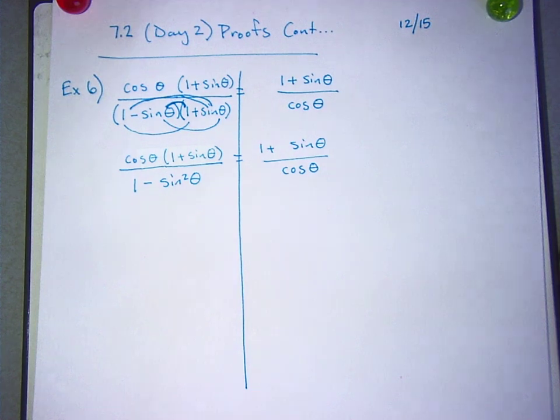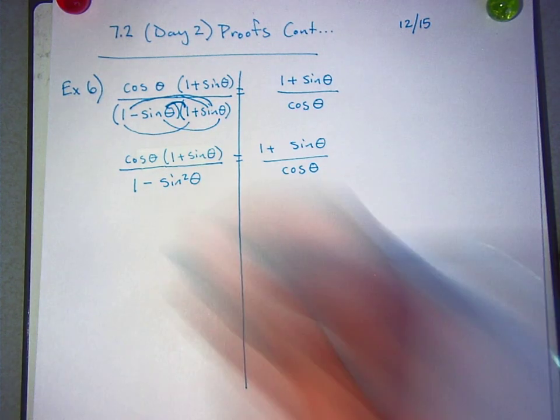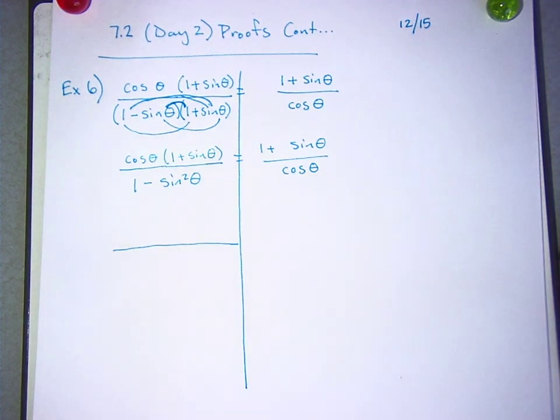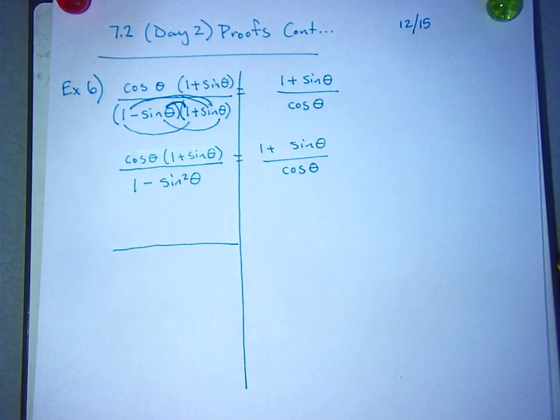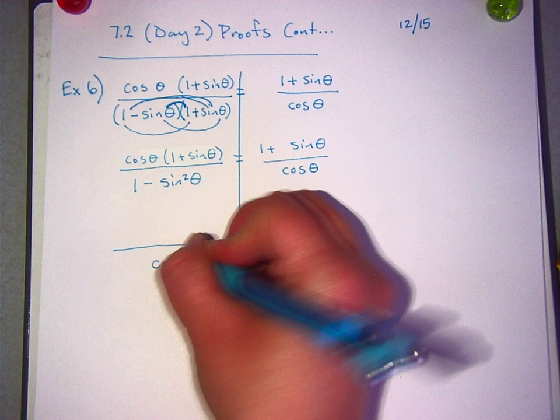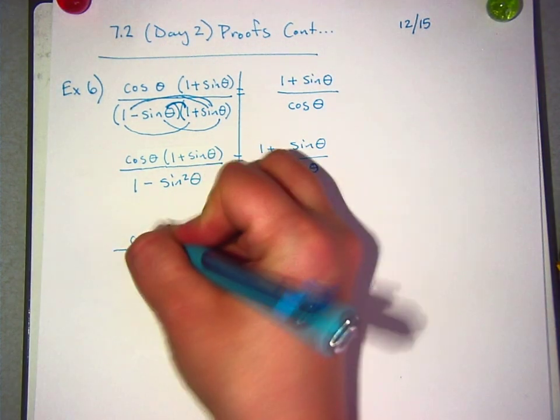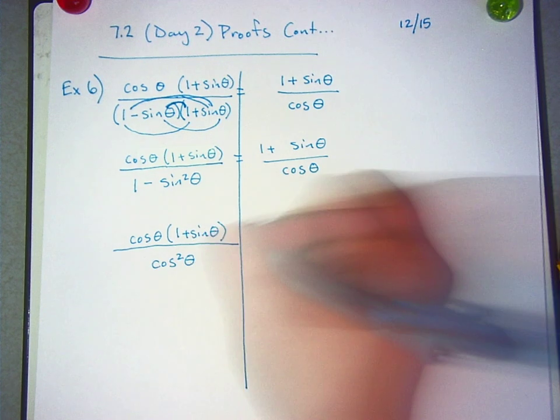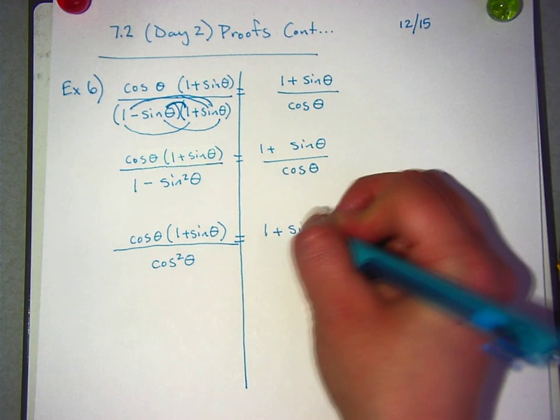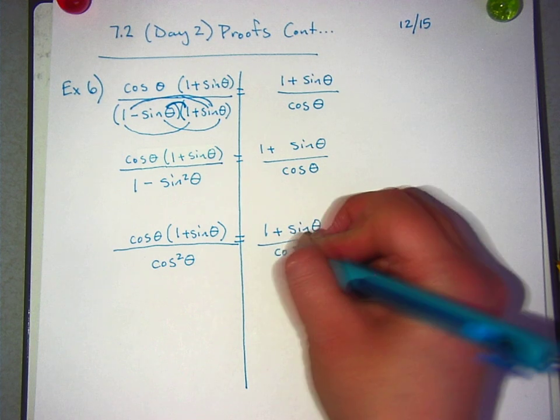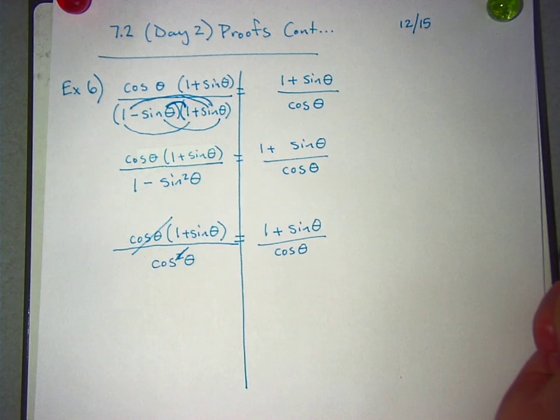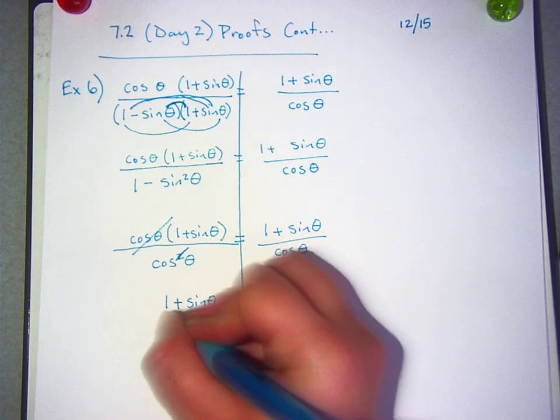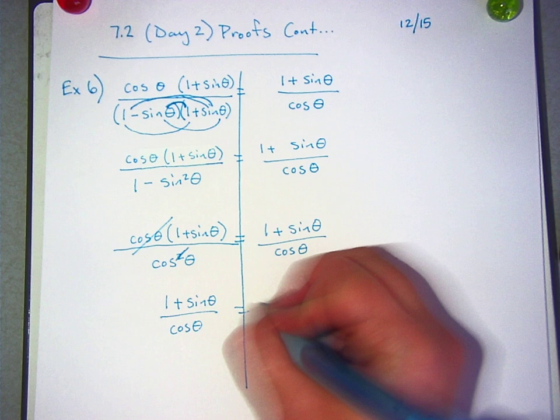Am I talking too much about what I'm thinking in my head, or is this helping? So what can I replace the bottom with now? What was the whole point of making it 1 minus sine squared? Cosine squared. So 1 minus sine squared is cosine squared. Cosine squared theta goes on the bottom now. On the top, I've still got cosine theta and 1 plus sine theta, which I'm deliberately not distributing in because I think that that already matches. And now what? Cross out this cosine and the square down there to cancel out. I'm left with 1 plus sine of theta over cosine theta on both sides.